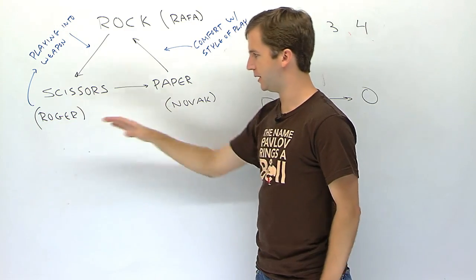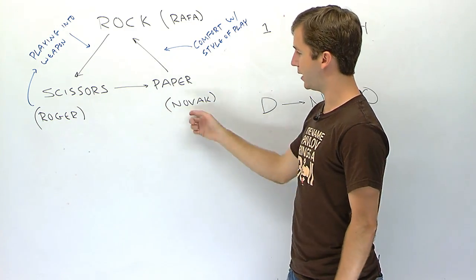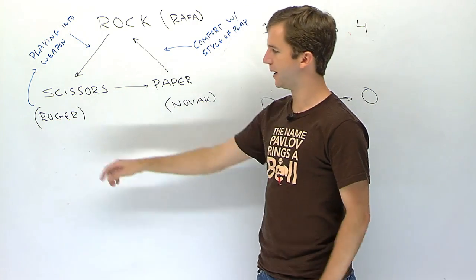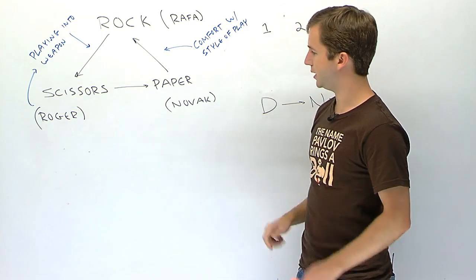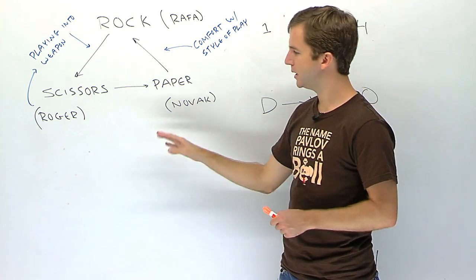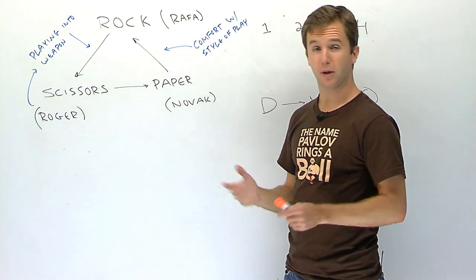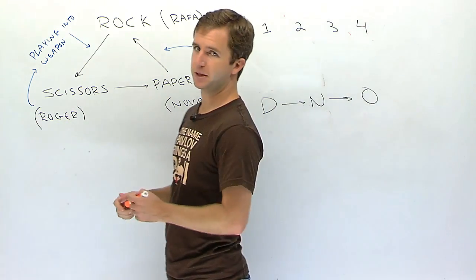You could say that maybe Roger beating Novak, scissors paper, might not be totally the case, because while Roger did beat Novak the last time they played at the French Open, that great match, prior to that Novak had beaten Roger a couple times. But in that French Open match, Roger made a very nice adjustment that allowed him to get the best of Novak, kind of put himself back at the top of the leaderboard.